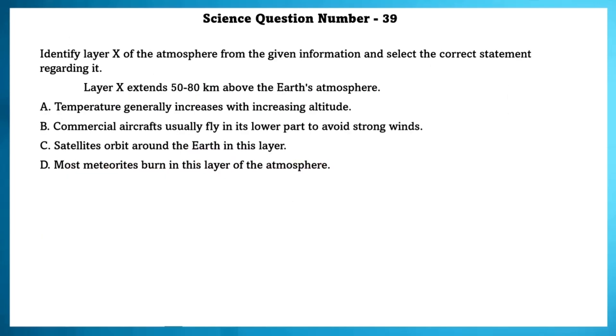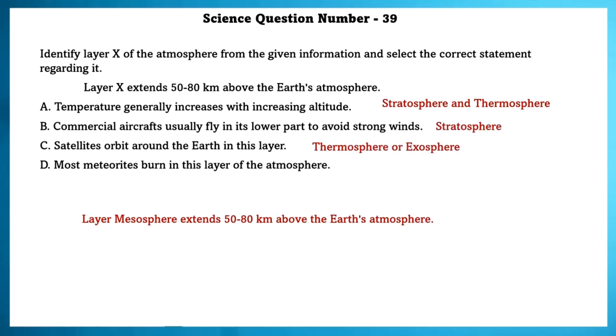Science question number 39. Identify the layer X of the atmosphere from the given information and select the correct statement regarding it. Layer X extends 50 to 80 km above the Earth's atmosphere. Layer mesosphere extends 50 to 80 km above the Earth's atmosphere. Temperature generally increases with increasing altitude. This happens generally with stratosphere and thermosphere. Commercial aircrafts usually fly in the lower part to avoid strong winds. This usually happens in the stratosphere. Satellites orbit around the Earth in this layer. Thermosphere or Exosphere. Most meteors burn in this layer of the atmosphere. Mesosphere.